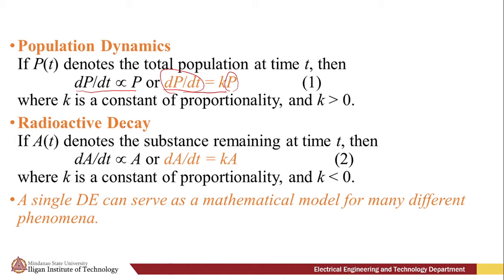We also have radioactive decay. For radioactive decay, we denote A(t) as the substance remaining at time t. Then, the change of substance with respect to time is directly proportional to the amount of substance present at that specific time. Same with population dynamics, we convert it into an equation. So we have dA/dt = kA where k is a constant of proportionality and k is less than zero since we are dealing with a decay model. If you notice, a single differential equation can serve as a mathematical model for many different phenomena. We have identical mathematical models for different systems.